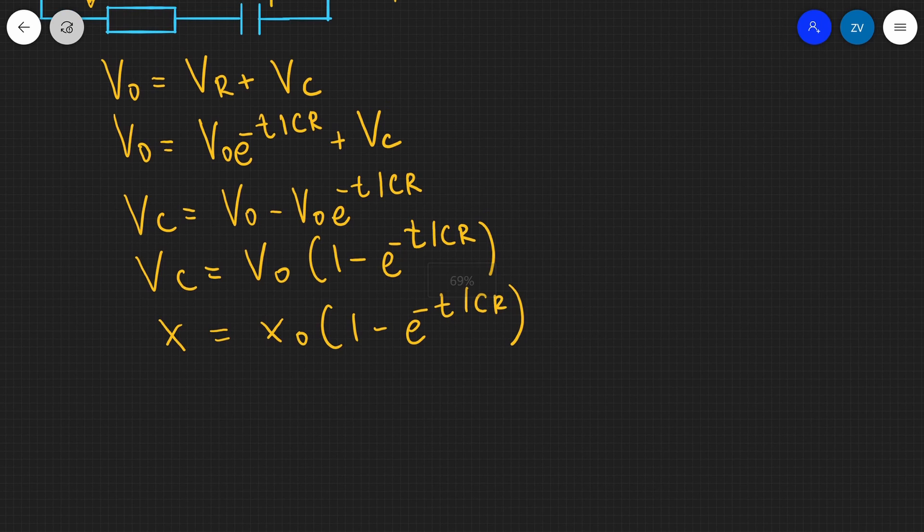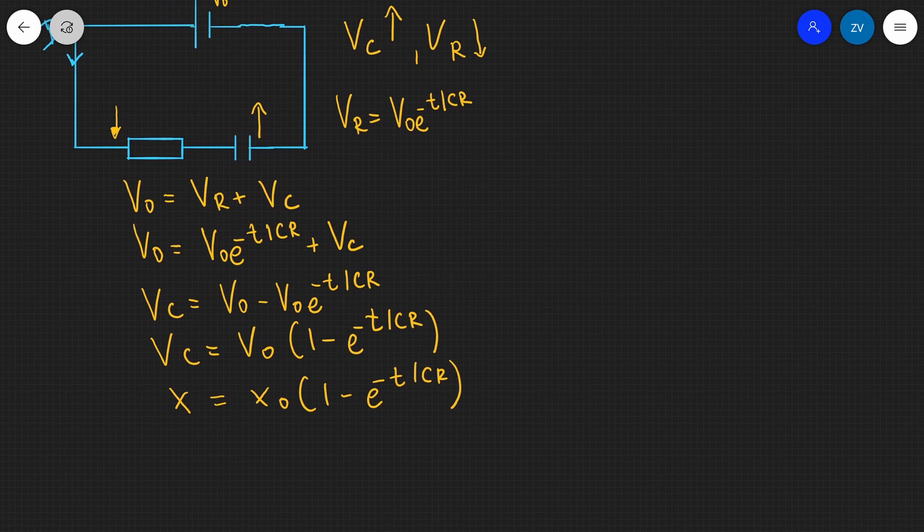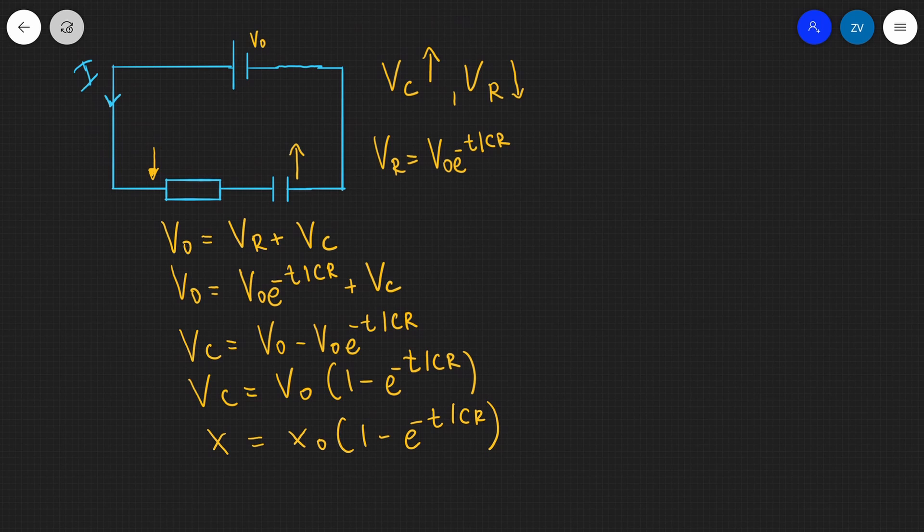The reason why this formula is given this way is because it also applies for the charge across a capacitor. So just to summarize, we've used Kirchhoff's second law and we have expressed this as V0, which is our EMF, our potential difference across our source over here. And this is going to equal the two PDs VR plus VC. The potential difference across the resistor is initially V0 and then it decreases exponentially via V0 e to the minus T over CR.